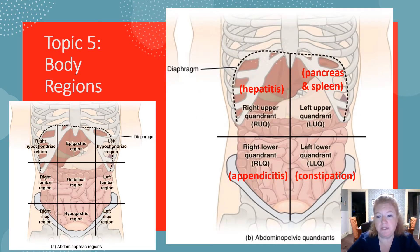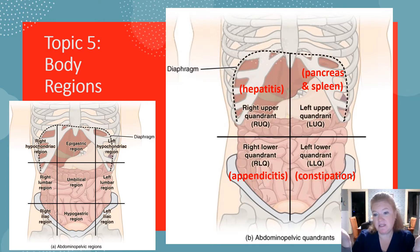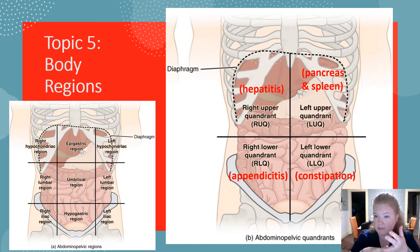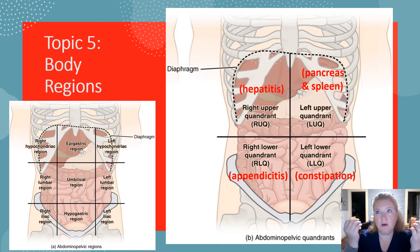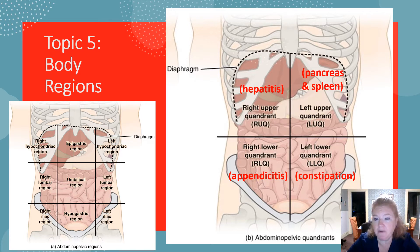We also talked about the abdominopelvic regions and quadrants. For regions, just remember there are nine. For quadrants, you should know the names — right upper quadrant, left upper quadrant, and so on. For each of the four quadrants, remember one example of where pain might occur. For example, appendicitis would be felt in the right lower quadrant, and hepatitis would be felt in the right upper quadrant.